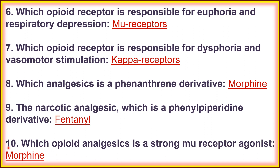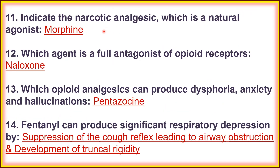Tenth, which opioid analgesic is a strong mu receptor agonist? That is morphine. Morphine is a strong mu receptor agonist. When morphine binds to the mu receptor, it produces euphoria and respiratory depression. Eleventh, the narcotic analgesic which is a natural agonist is morphine, obtained from the plant Papaver somniferum, family Papaveraceae.